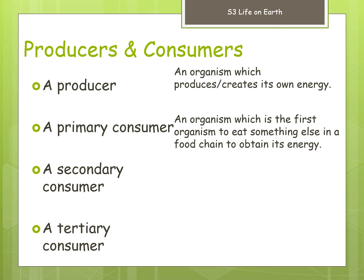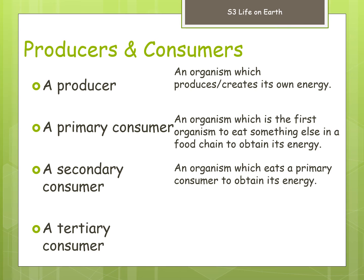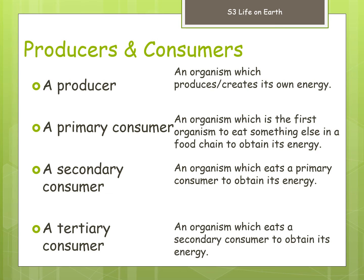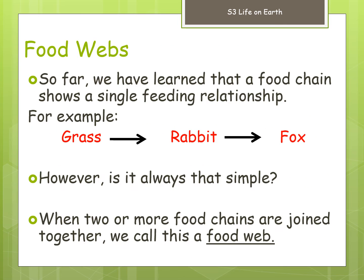A secondary consumer consumes a primary consumer to obtain its energy, and a tertiary consumer eats a secondary consumer to obtain its energy. So: producers create their own energy by photosynthesis, then consumers consume another organism — primary consumer eats a producer, and secondary and tertiary consumers follow on from there. Those are the definitions you need to understand and write down today.